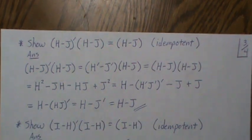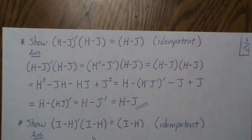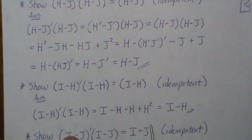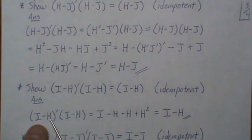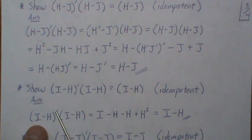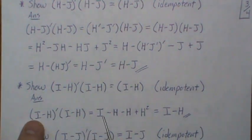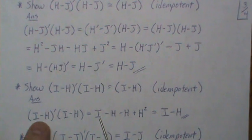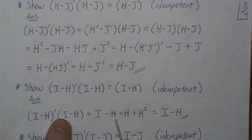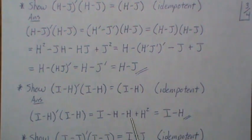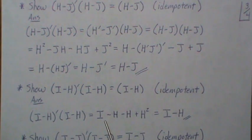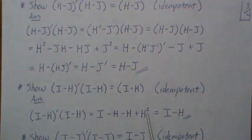We also show that (I−H) is idempotent. Since I and H are symmetric, (I−H)'(I−H) = (I−H)(I−H). Expanding: I·I − H − H + H². H is idempotent so H²=H, giving −H and +H that cancel. We're left with I−H. Done.